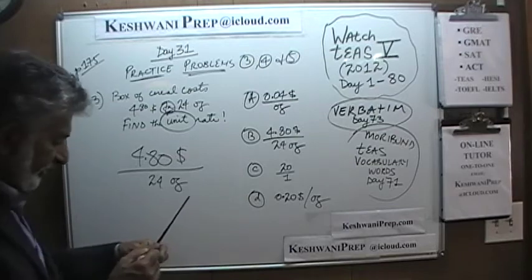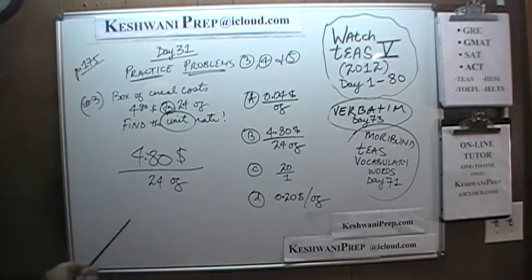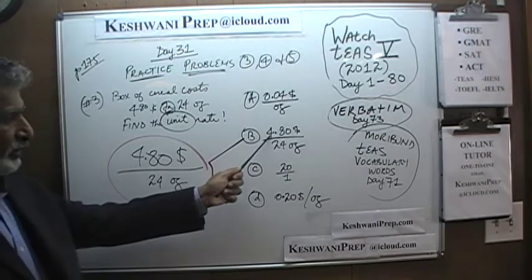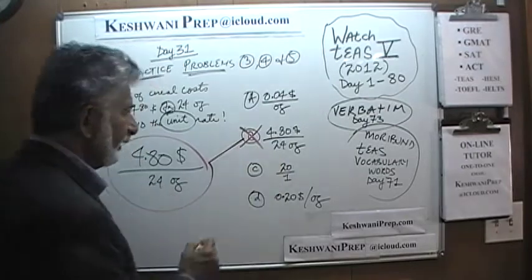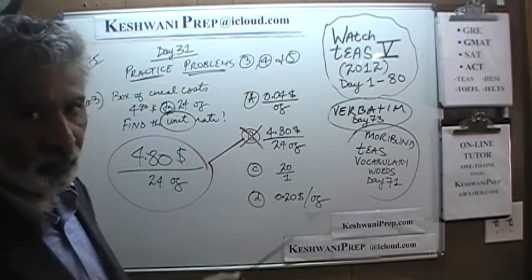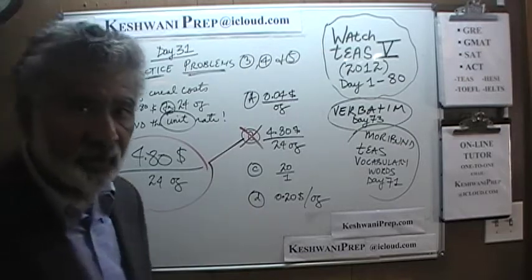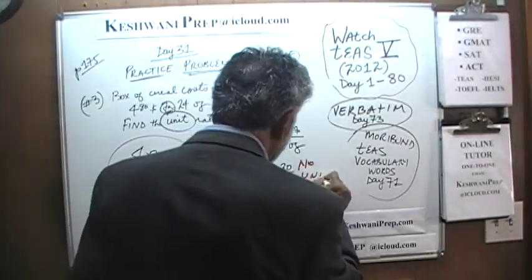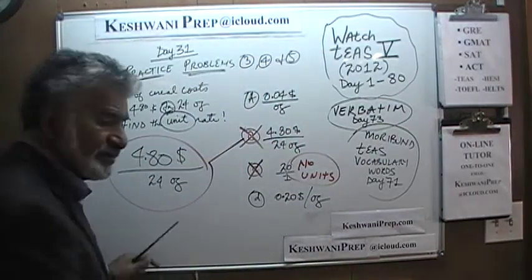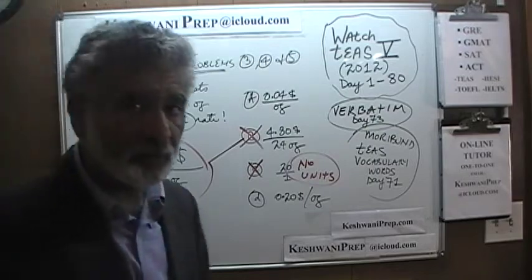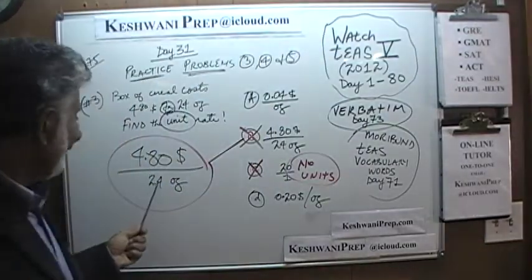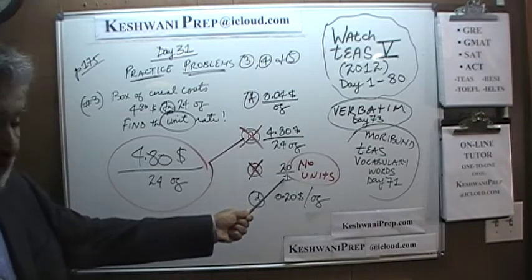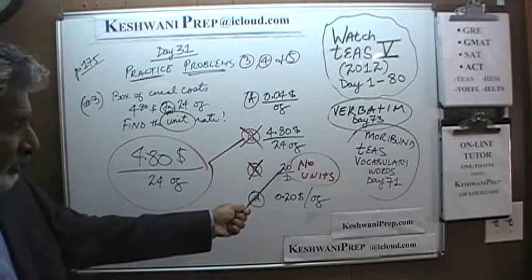Before we do any work, let's look at the answer choices and cross out the silly ones. Answer choice B is identical to what we have — it's a rate, but it's not a unit rate. It's per 24 ounces, not per one ounce. That's why B is wrong. Answer choice C is wrong because it has no units. Simply saying 4.8 divided by 24 has no meaning — nobody knows what you're talking about. It must have a unit.